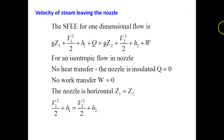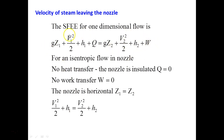Next topic: velocity of the steam leaving the nozzle. This is a repetition from thermodynamics. The steady flow energy equation for one-dimensional flow is: gZ₁ + V₁²/2 + H₁ + Q = gZ₂ + V₂²/2 + H₂ + W. This is the general form of the steady flow energy equation.